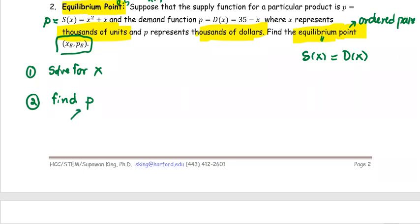To find p, you can use either the S or D function. From the problem, how do you solve for x? Set S(x) equals D(x). The supply is x² + x, the demand is 35 - x, and you are solving for x.